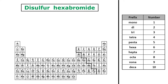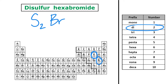So here we have disulfur hexabromide. Sulfur with the prefix di means it's S2, and hexabromide — the symbol is Br, and hexa is six. So the formula for disulfur hexabromide is S2Br6.